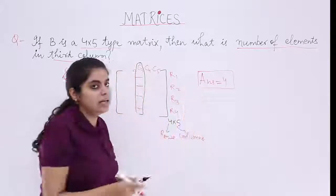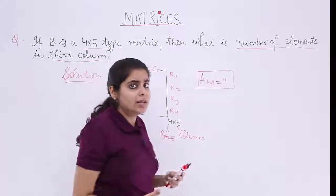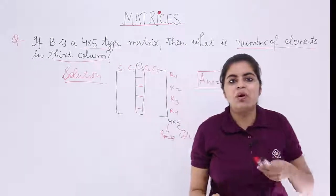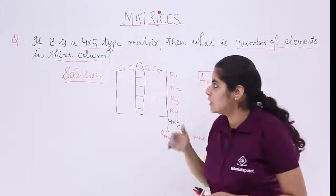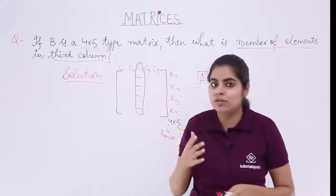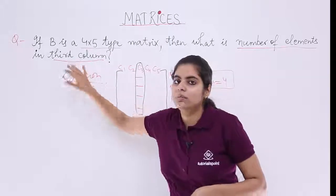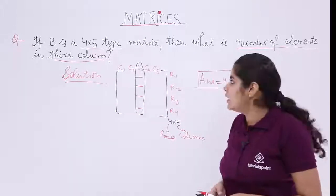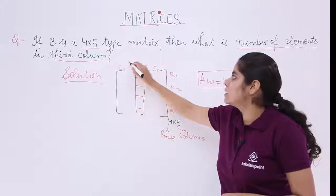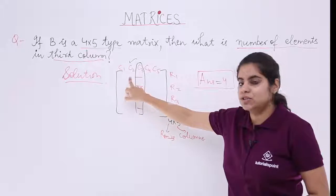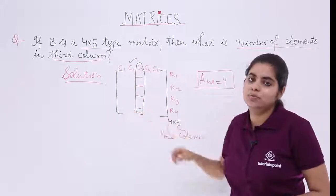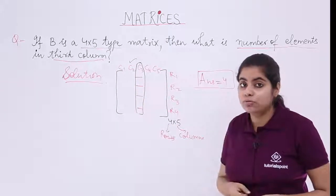Now finding the answer is one thing and understanding few more important things related to this question is the other thing. Suppose somebody had asked me or the question was not about the third column rather it was about the second column. Now you see the second column is where? It is here. Again the same answer. Why? Because first element here, second here, third here, fourth here. So again you got 4.